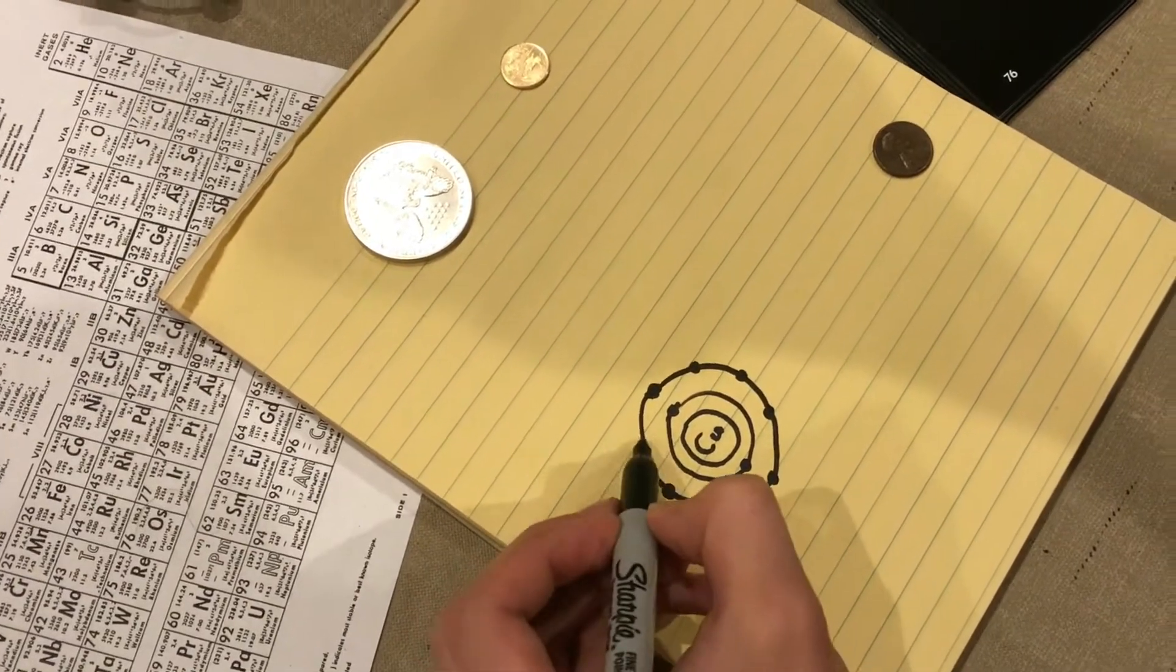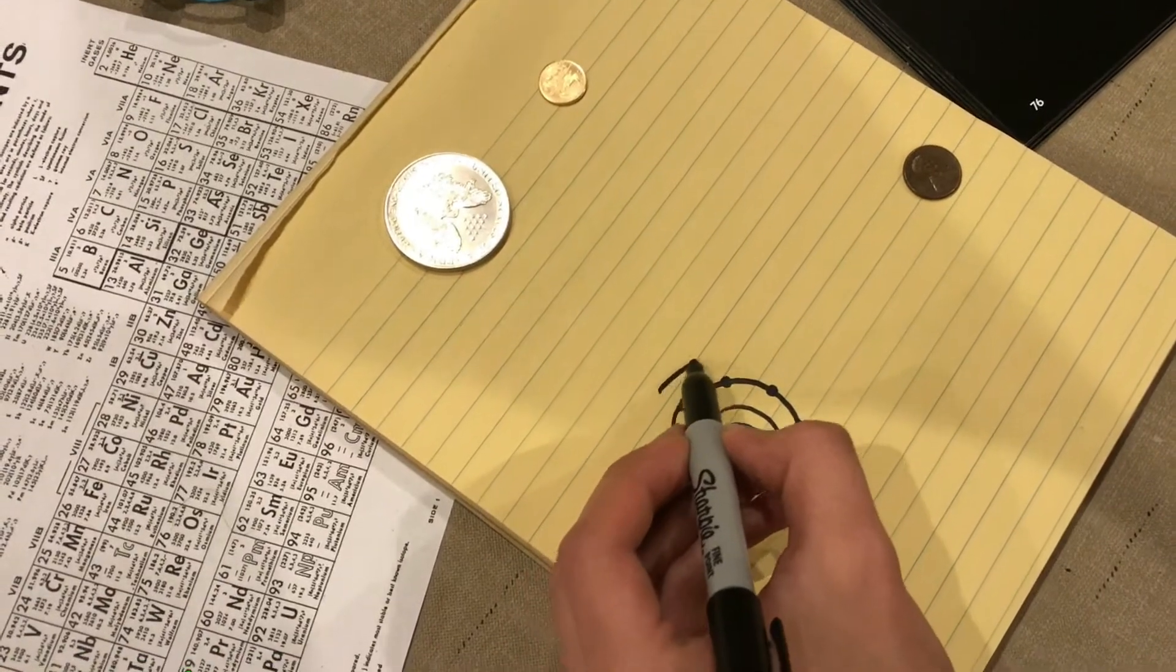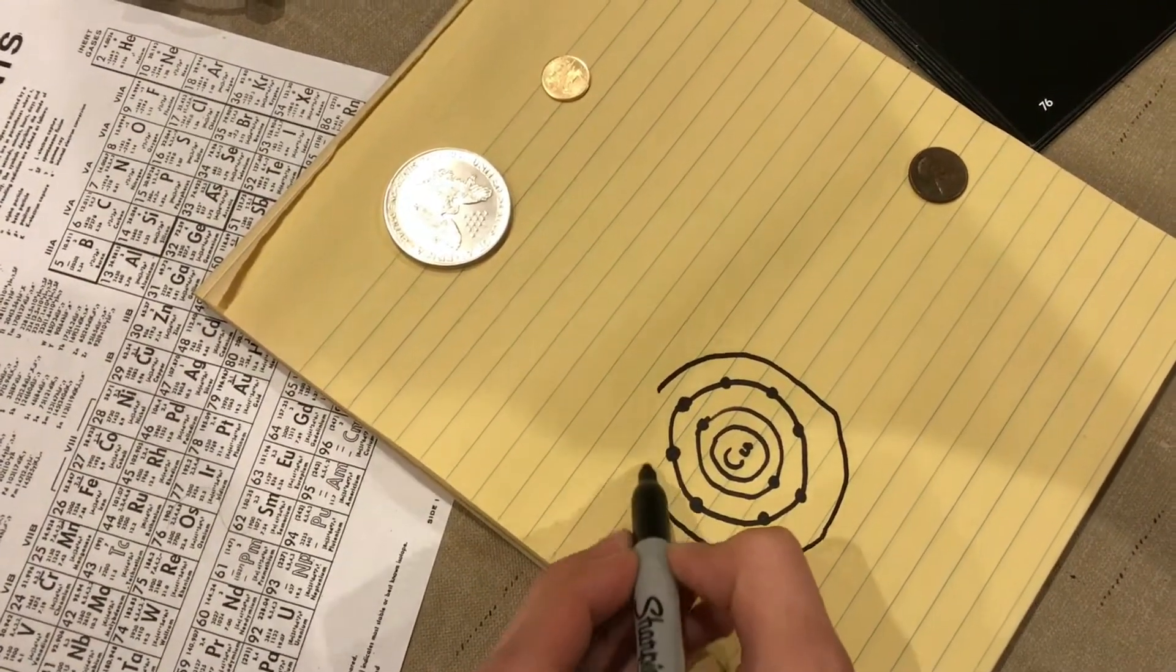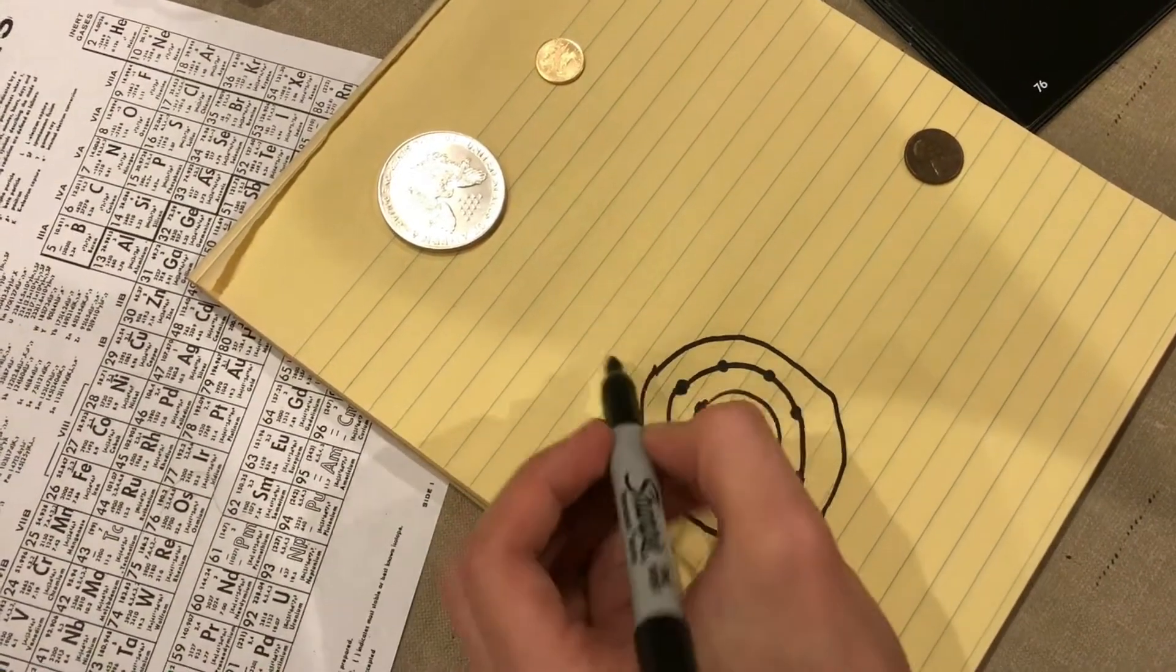Okay so we're up to ten, we still have a lot more to put in. Another ring, it's a little farther out and this one has 18 electrons.